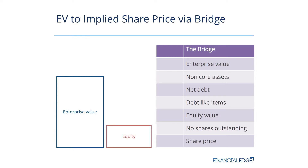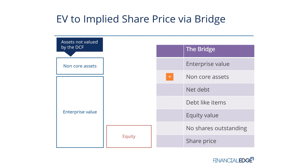We start with the enterprise value and we add on non-core assets — assets not valued by the DCF. This might include associates, equity affiliates, and equity investments.